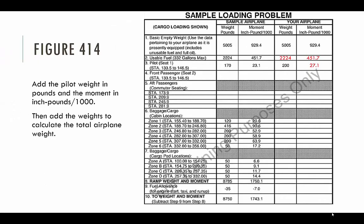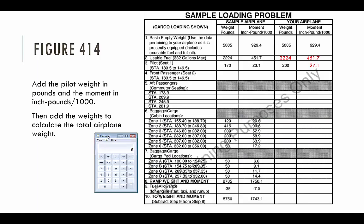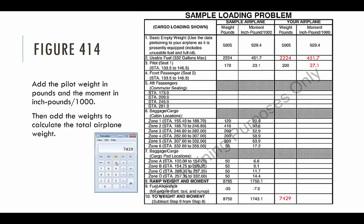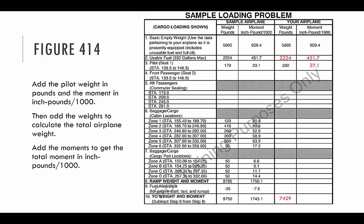Adding up all weights: 5,005 (basic weight) + 2,224 (fuel) + 200 (pilot) = 7,429 pounds total. For moments: 929.4 + 451.7 + 27.1 = 1,408.2 inch-pounds/1,000. This is an important distinction — the moments are divided by 1,000, so we will need to multiply by 1,000 when calculating the center of gravity.